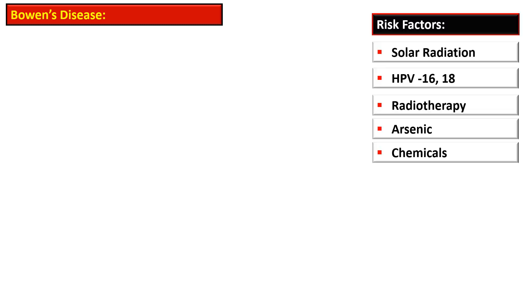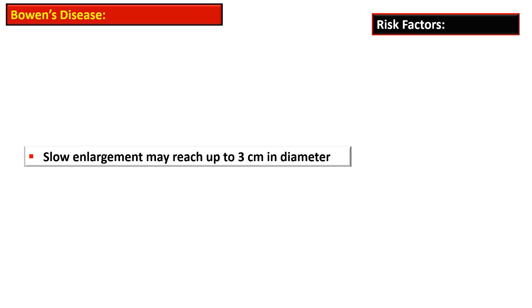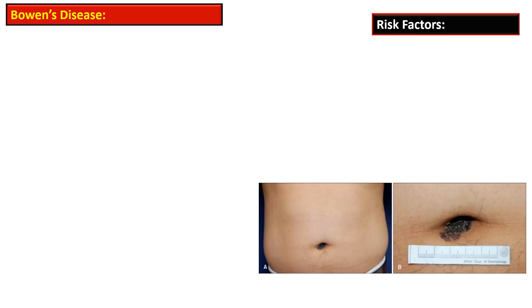They are well-defined erythematous patches with slight crusting. The risk factors for Bowen's disease are solar radiation, human papillomavirus 16 and 18, radiotherapy, ingestion of arsenic compounds, and exposure to chemicals. The lesion is slowly enlarging and may reach up to three centimeters in diameter, and over the years it may turn into invasive squamous cell carcinoma.